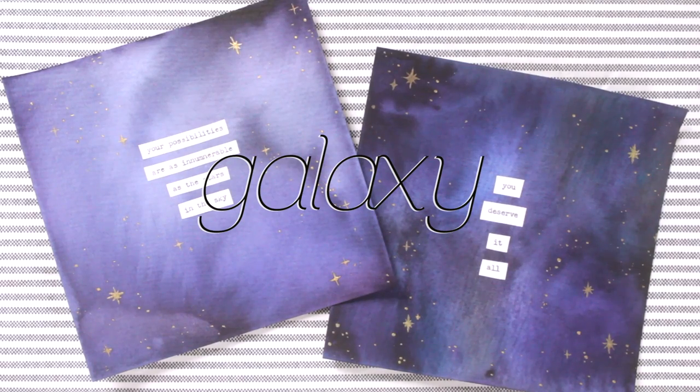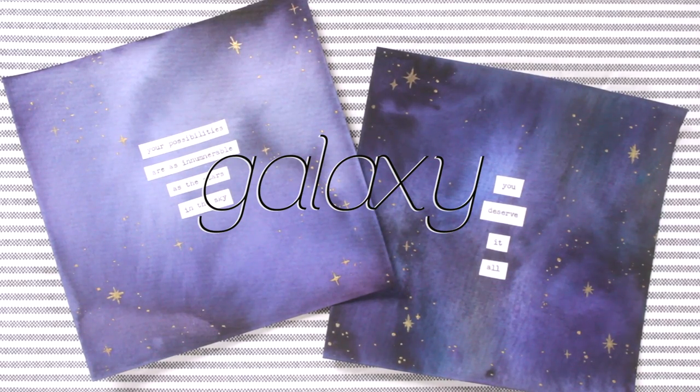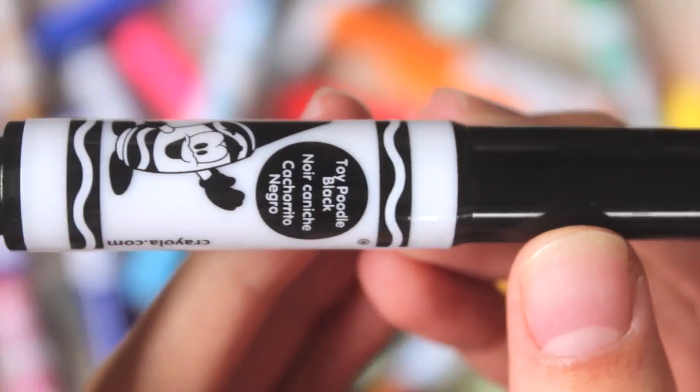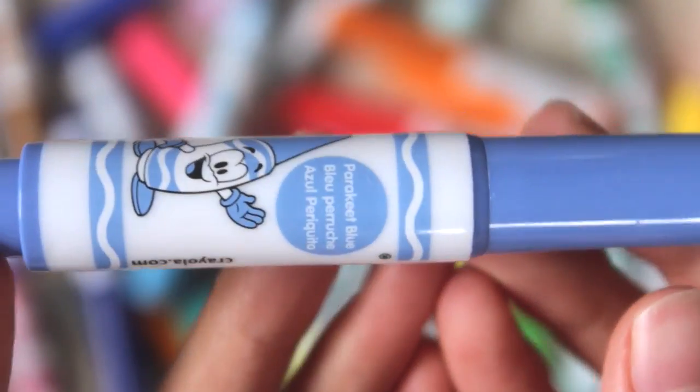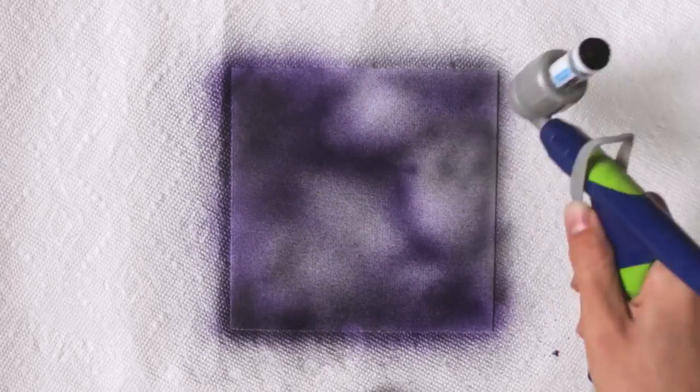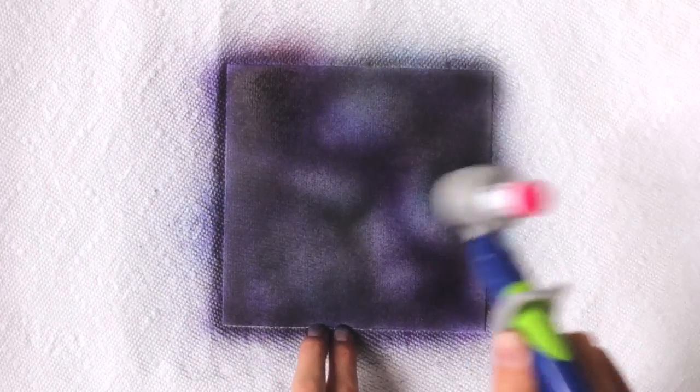A galaxy effect is super easy to make with the air marker sprayer. All I did was just go crazy at a piece of paper with a bunch of cool galaxy-esque colors. I chose black, purple, two shades of blue, and a kind of reddish-pinkish color. What you're going for is a piece of paper that's kind of patchy and has just a ton of marker on it.